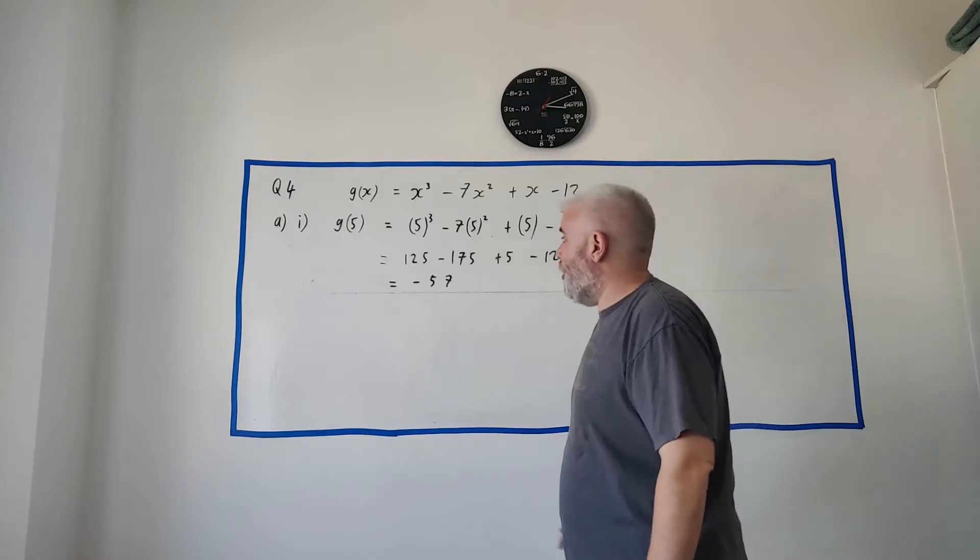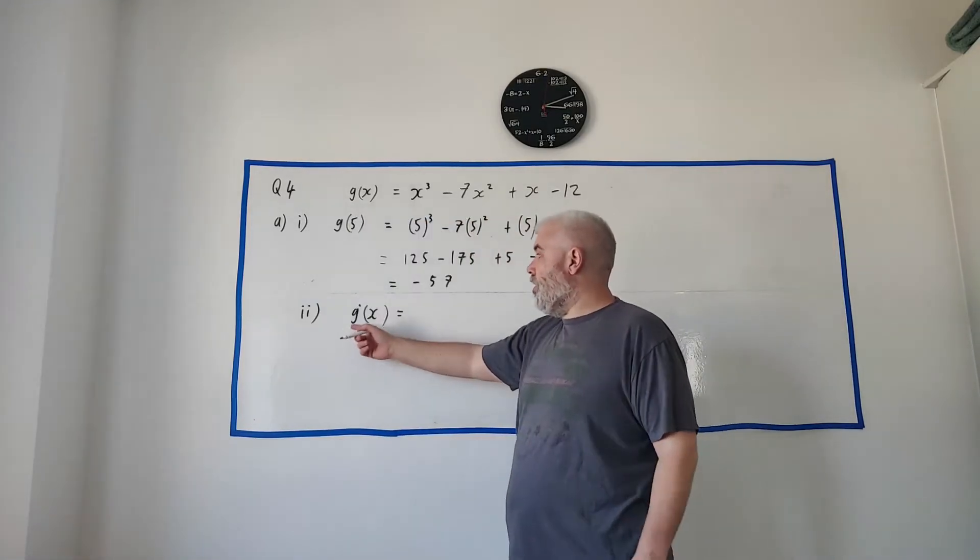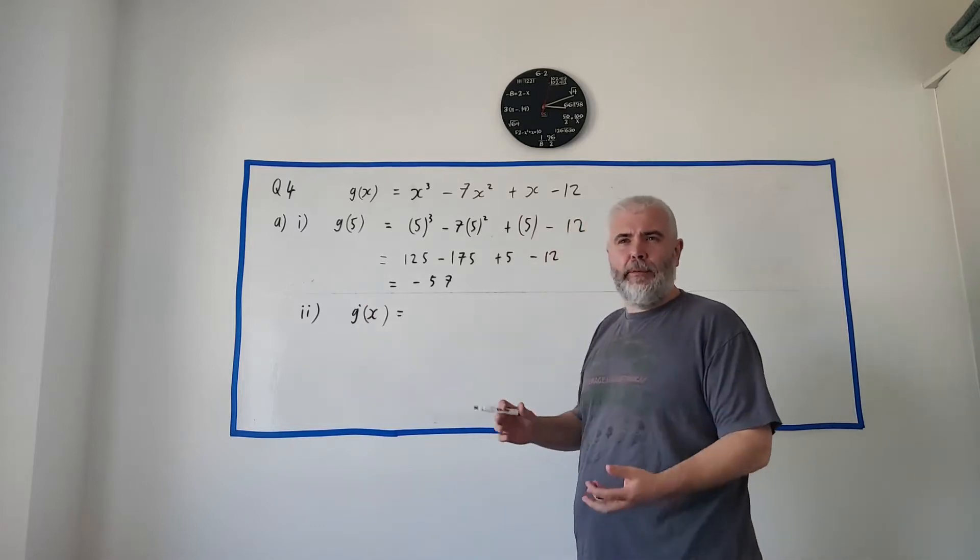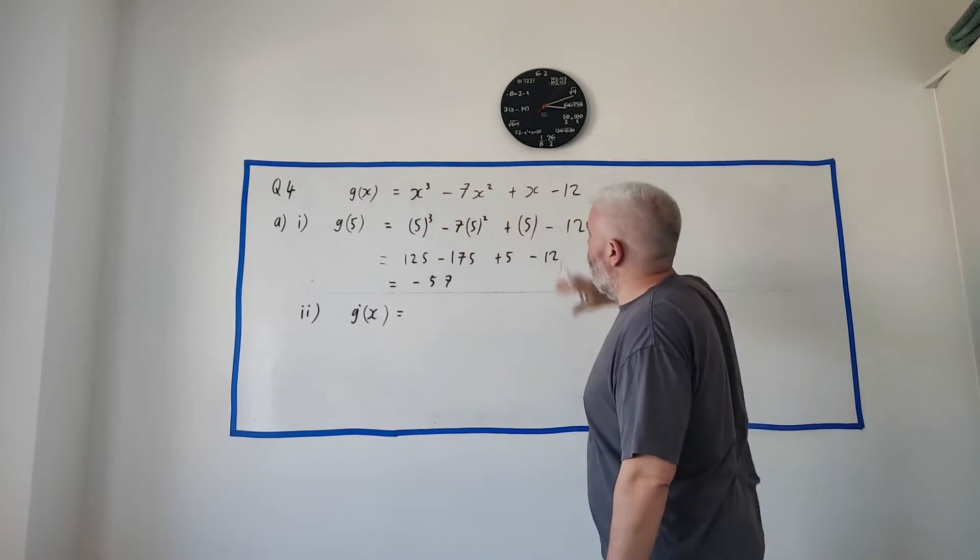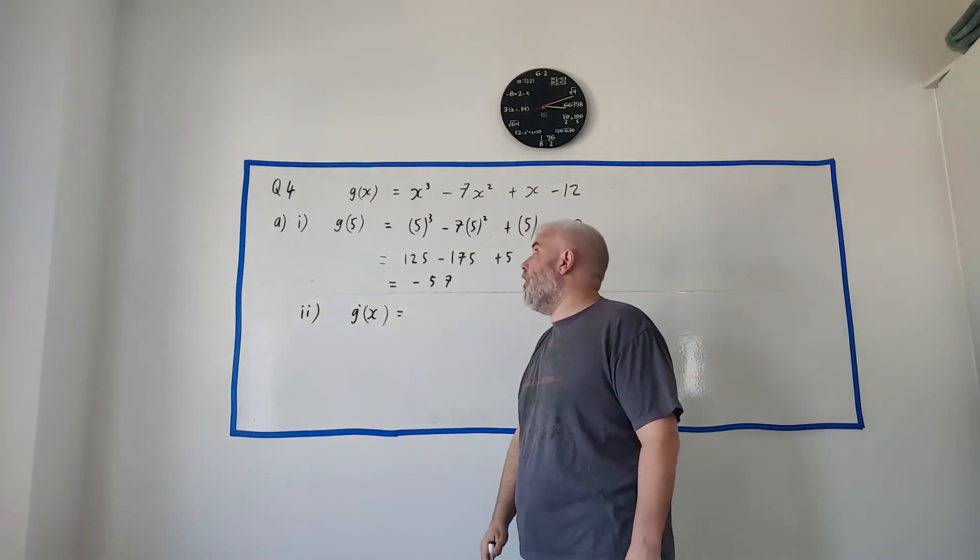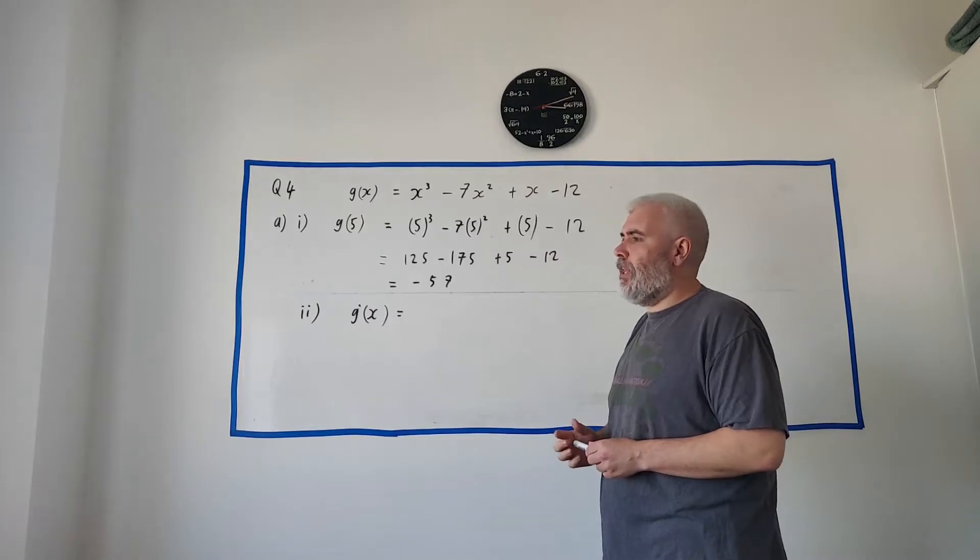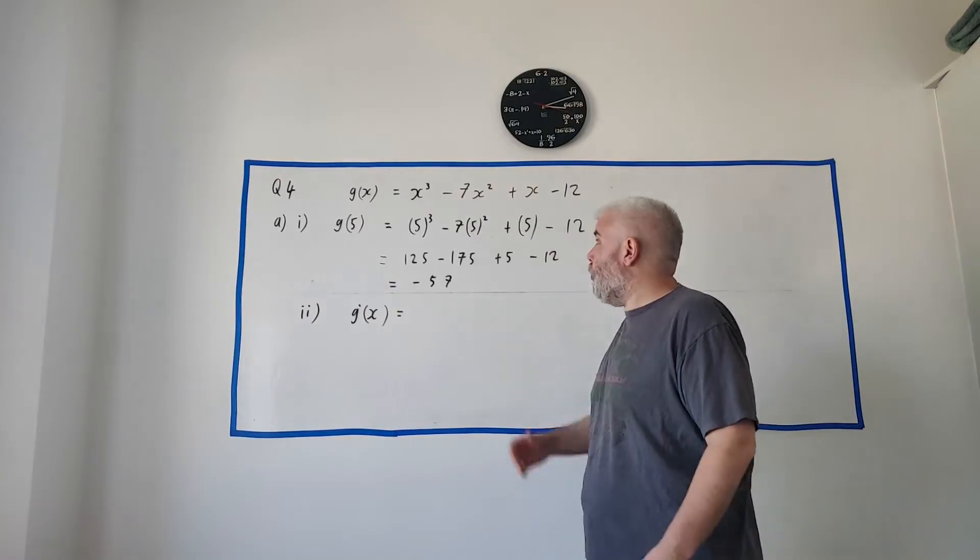Okay, so that's the answer to A part 1. For part 2, they ask us to find g prime x, and they tell us that means the derivative. So, we just want to differentiate this first equation here. I won't go into a lesson about how to differentiate, but it is a set of rules. It's a rule that you can just follow quite regularly.